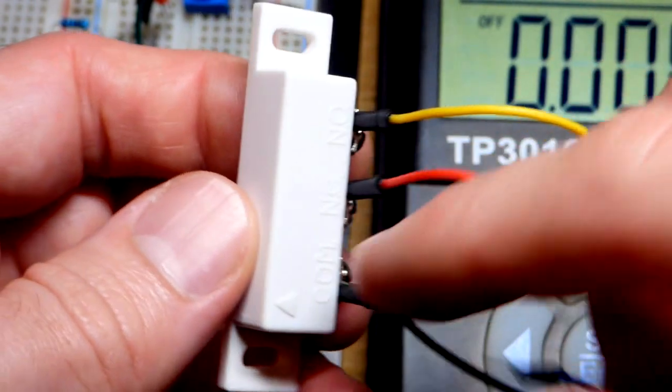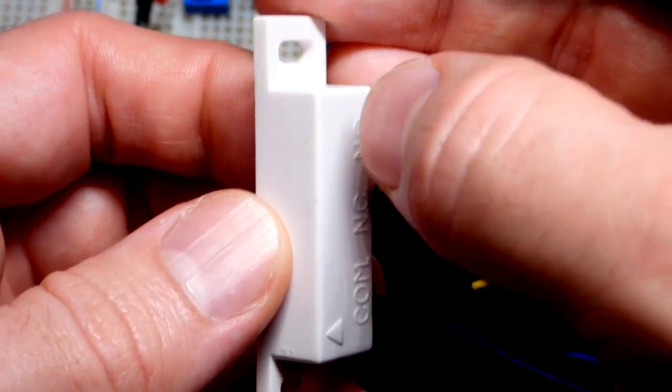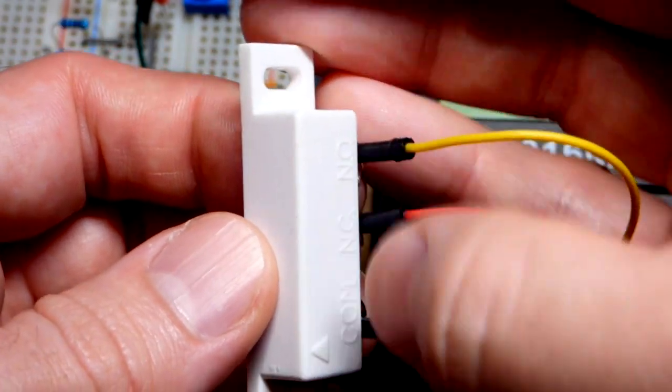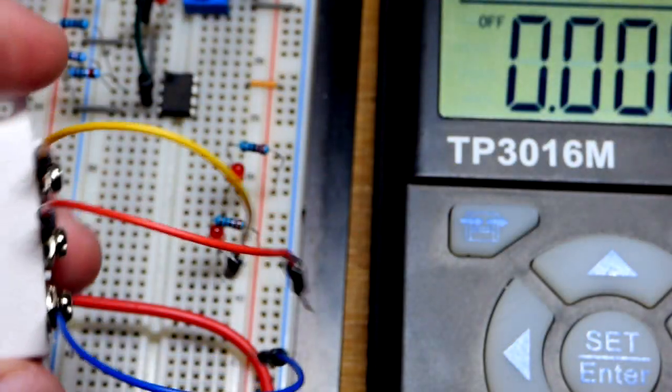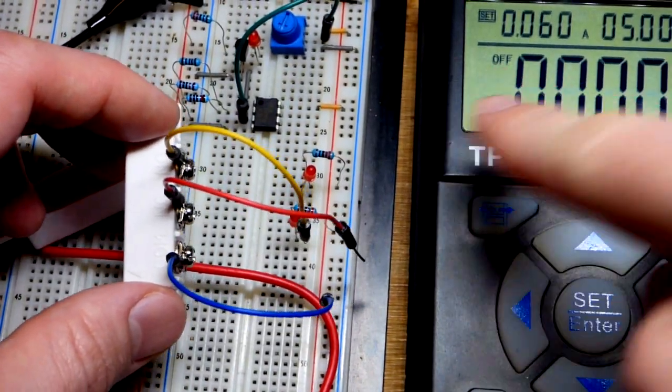So normally closed means that in the normal position that's on and that one's off. And then we, in this case, move the magnet. Now it's not the normal position. I don't know what exactly we'd call it. That would mean that one is now closed and then that one is open. It switches back and forth.